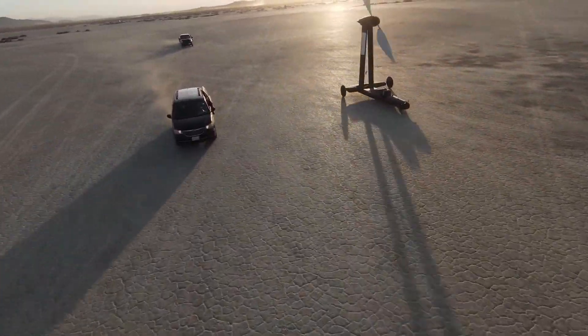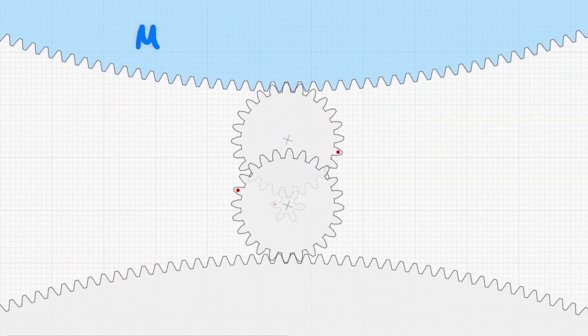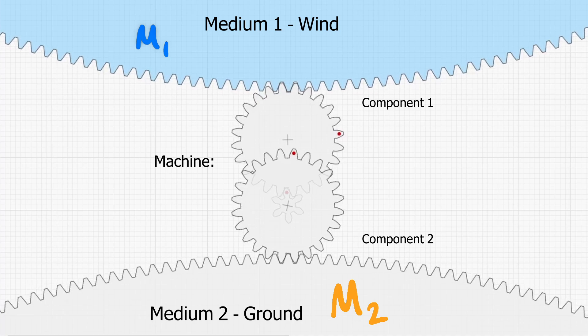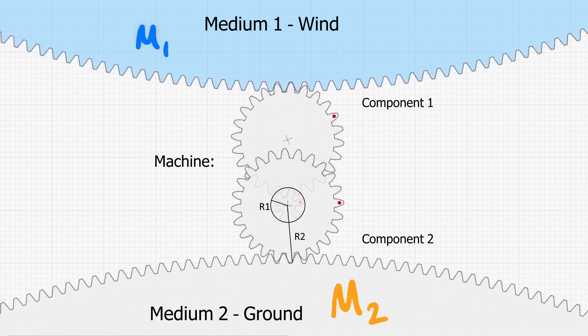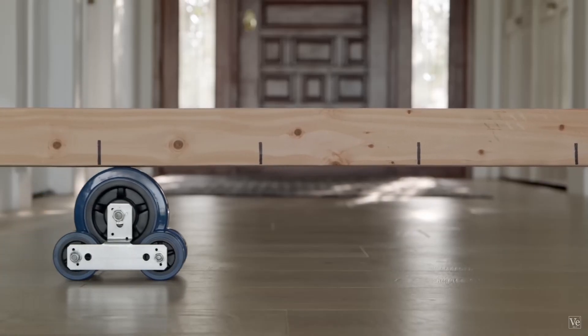How can a cart move faster than the wind that's pushing it? Faster than wind machines interface with two mediums with relative motion and use a ratio of radii to move faster than one from the reference of the other.